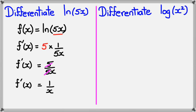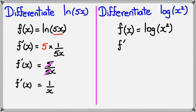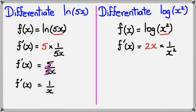Now for the second example: f(x) = log(x²). So f'(x) — as usual, the first step is to differentiate whatever's inside the bracket. Differentiating x² gives 2x, and that's multiplied by 1 divided by whatever the bracket is in the original, which is x².